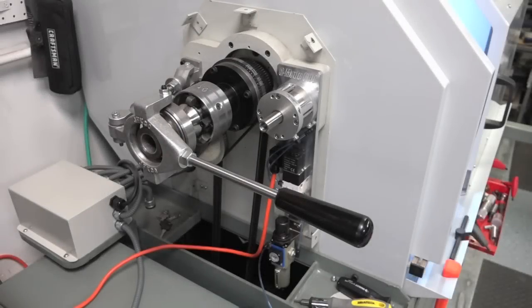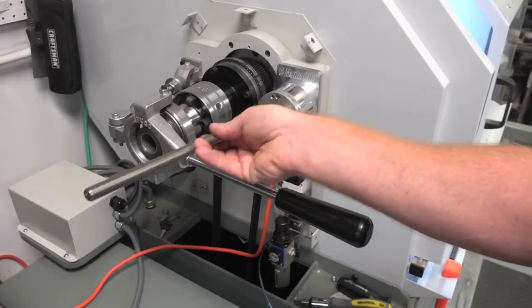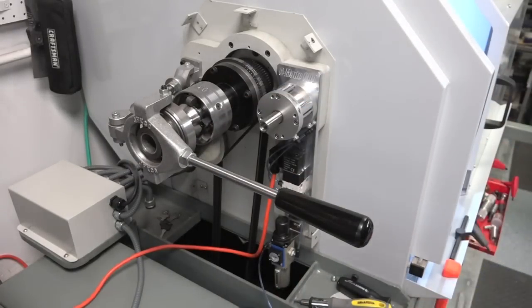So our next step is to cut the threaded rod and add this eyelet.